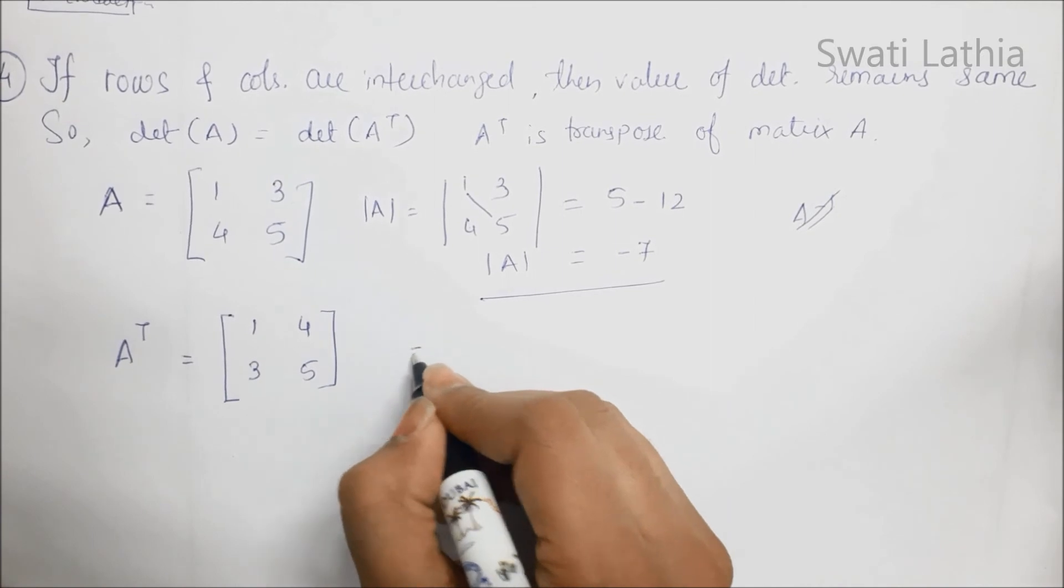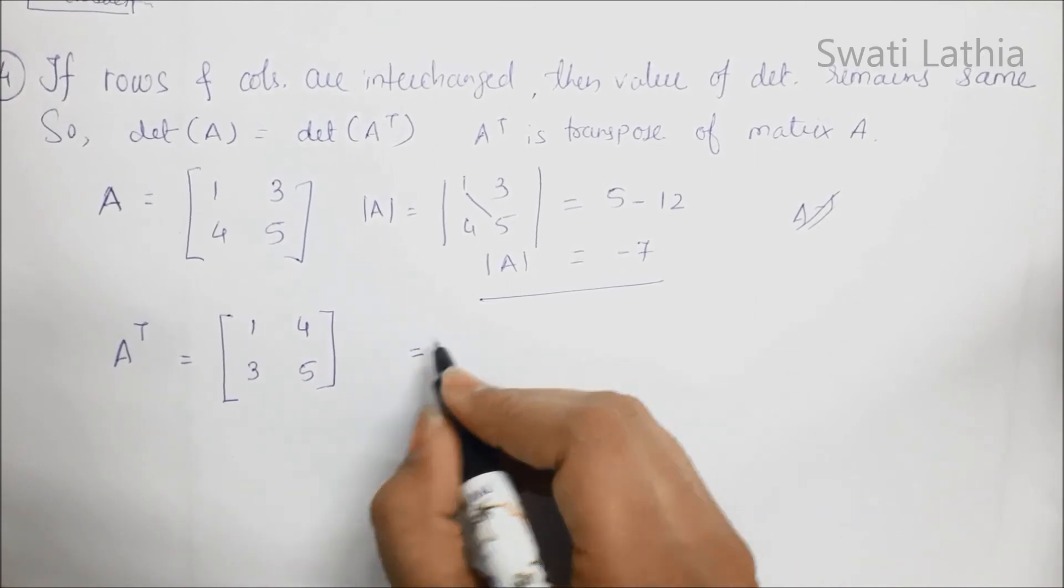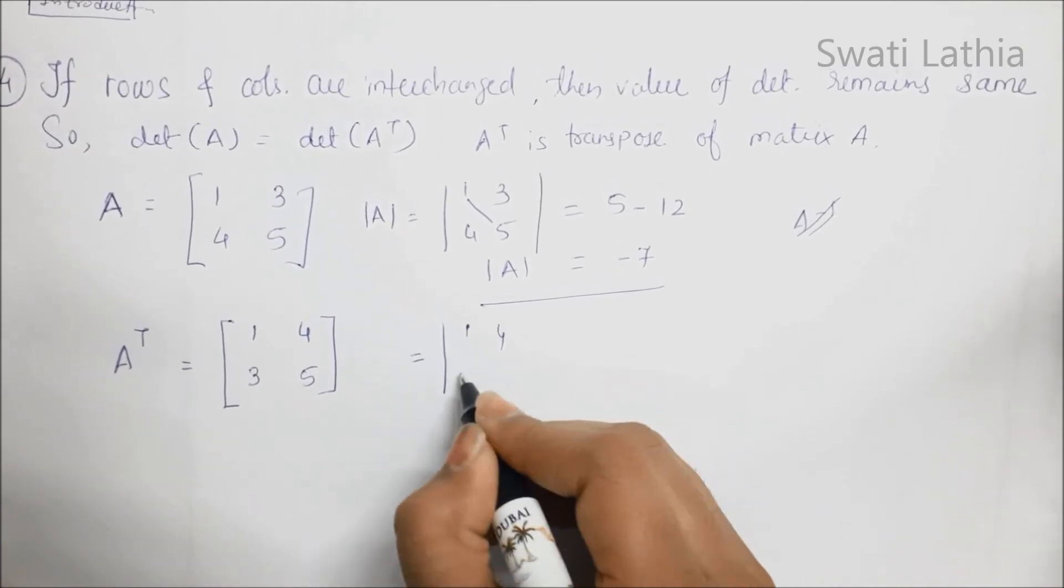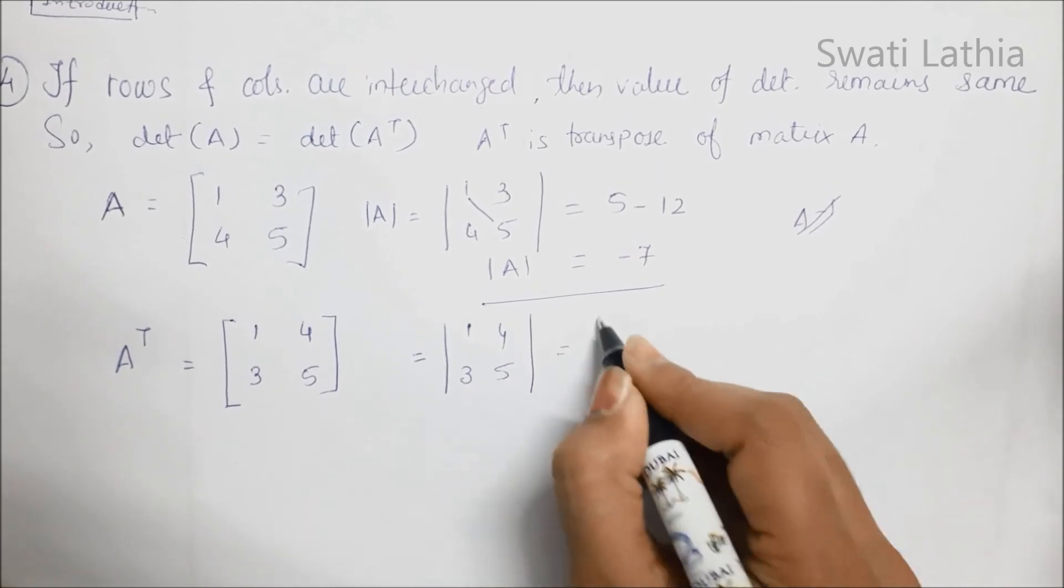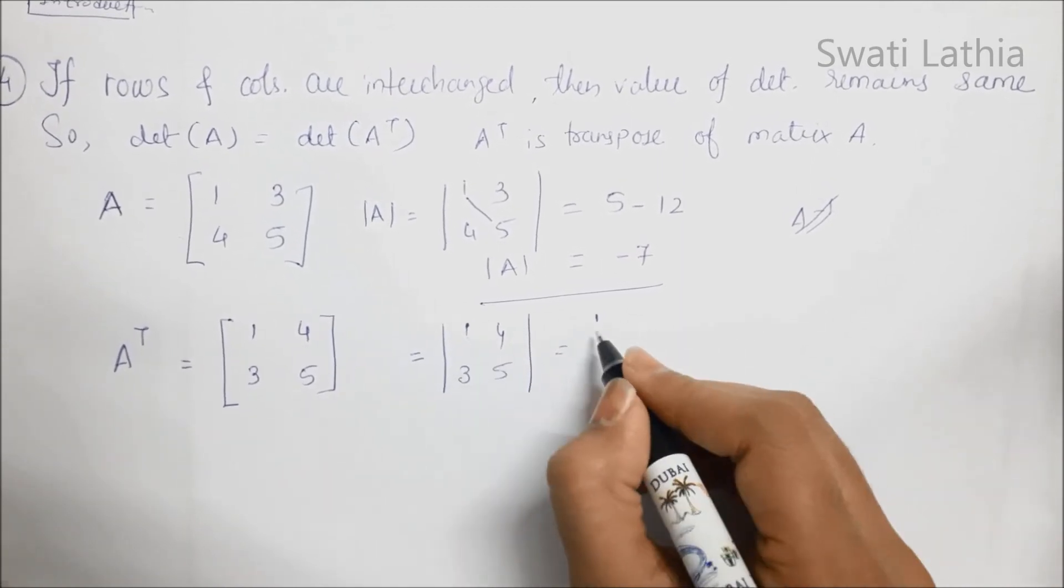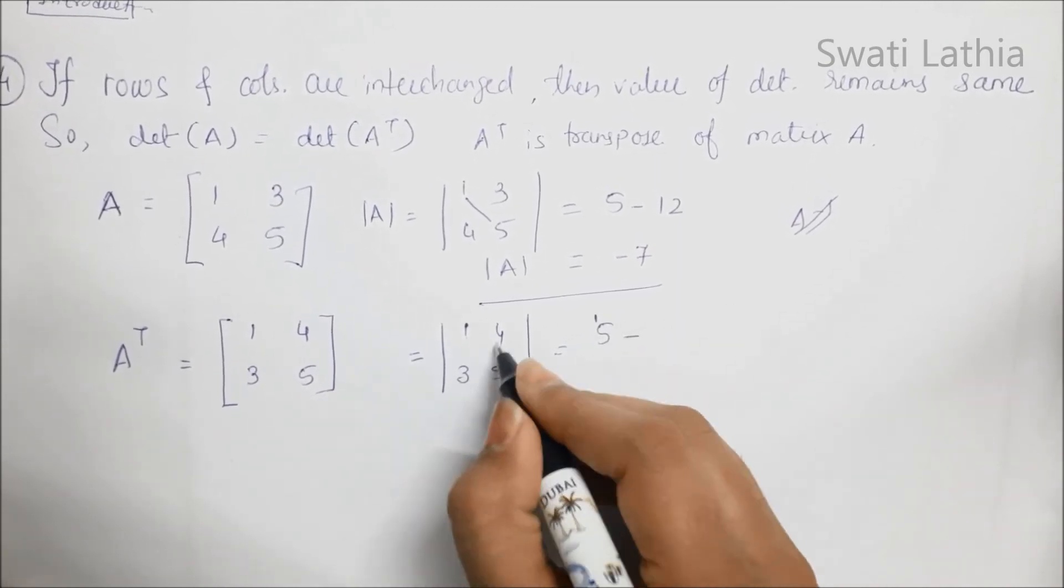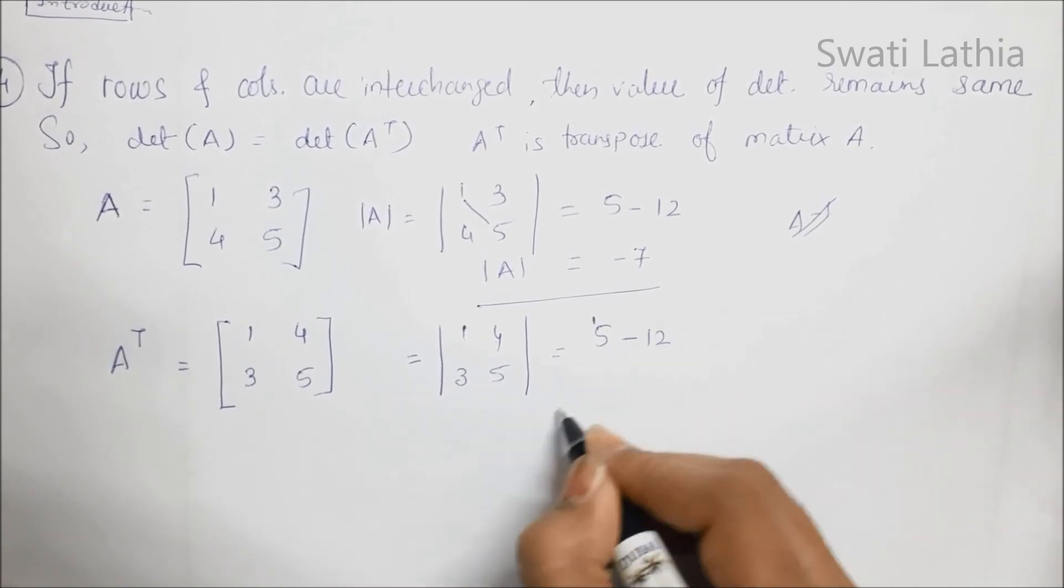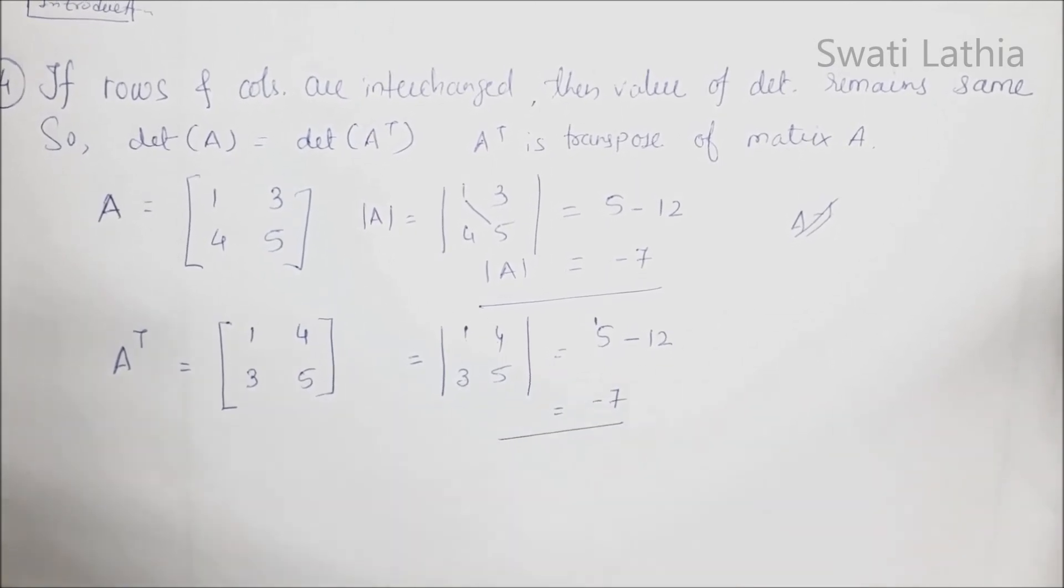aapde aaj vashto no determinant kariye. So, 1, 4, 3, 5. That is equal to 5 into 1, 5, minus 3 into 4, 12. That is equal to minus 7. Again,